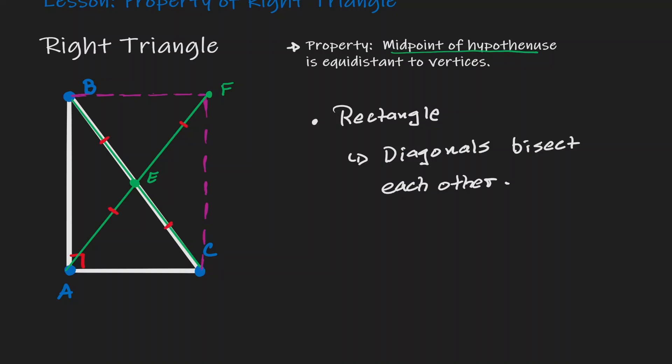And if that is the case, then notice what we have shown so far. The line segment AE is congruent to the line segment BE, which is also congruent to the line segment of EC.